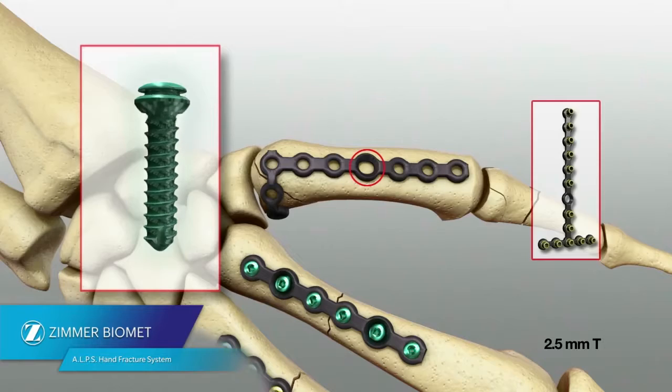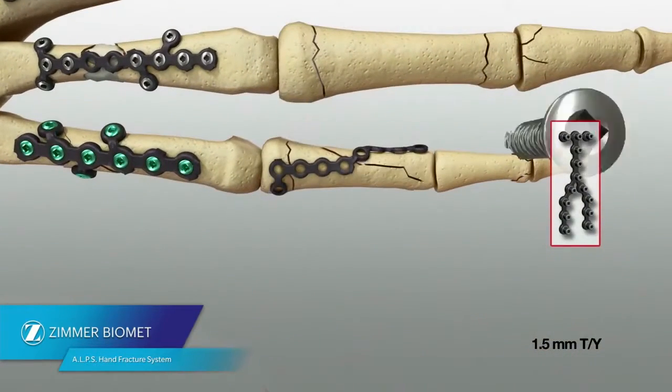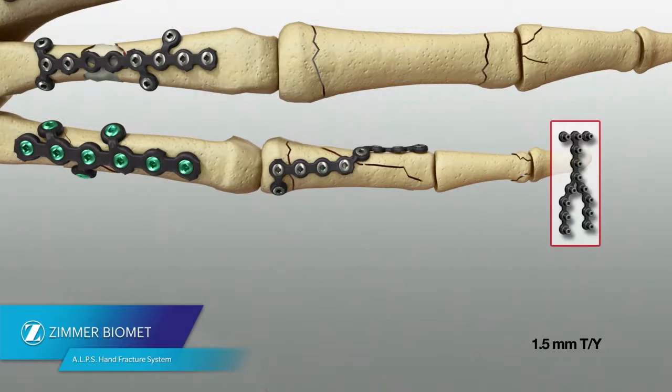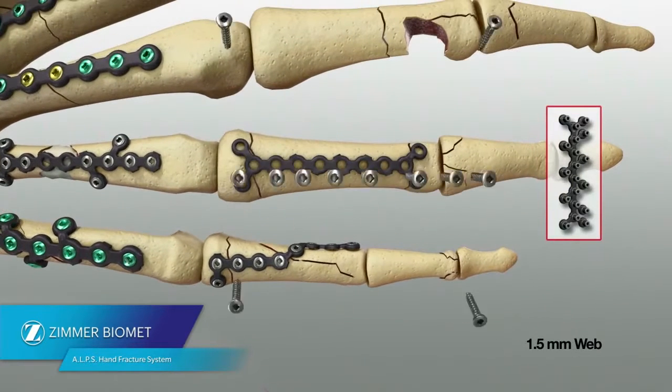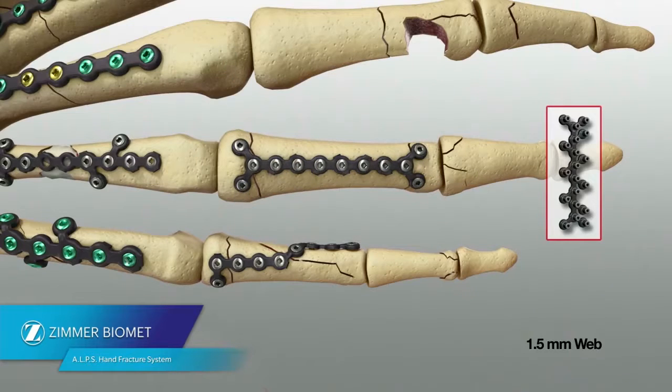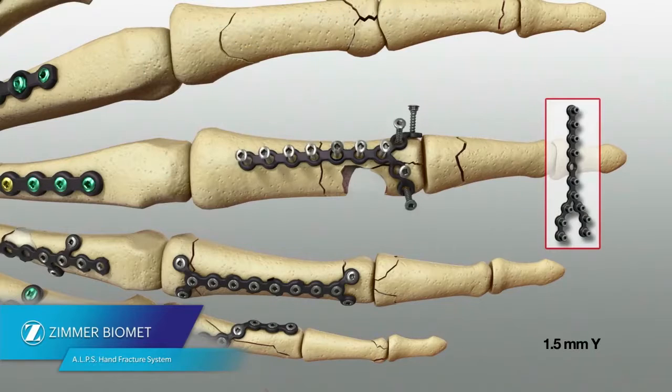The ALPS Hand Fracture Plating System features TIMAX, low-profile anatomically contoured implants. In hand surgery where soft tissue coverage is at risk, these low-profile plates are designed to minimize discomfort and soft tissue irritation, matching the anatomy of the phalanx and metacarpal.